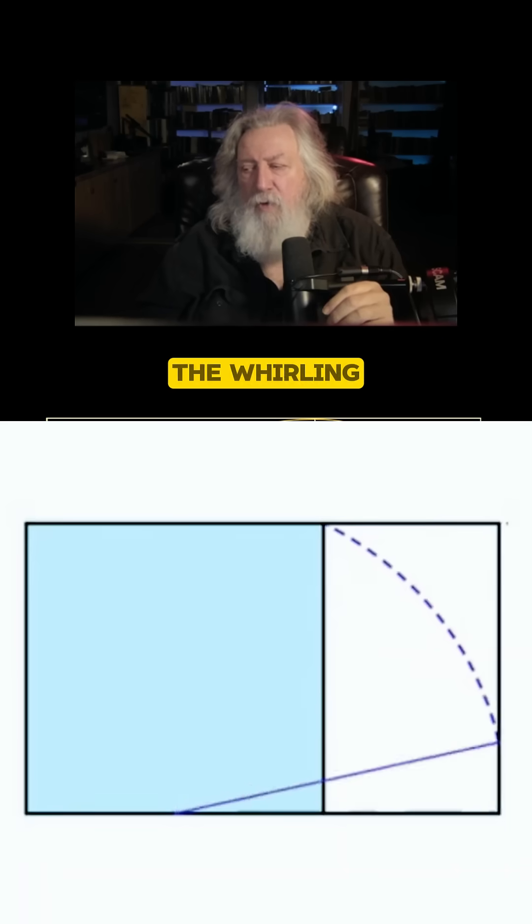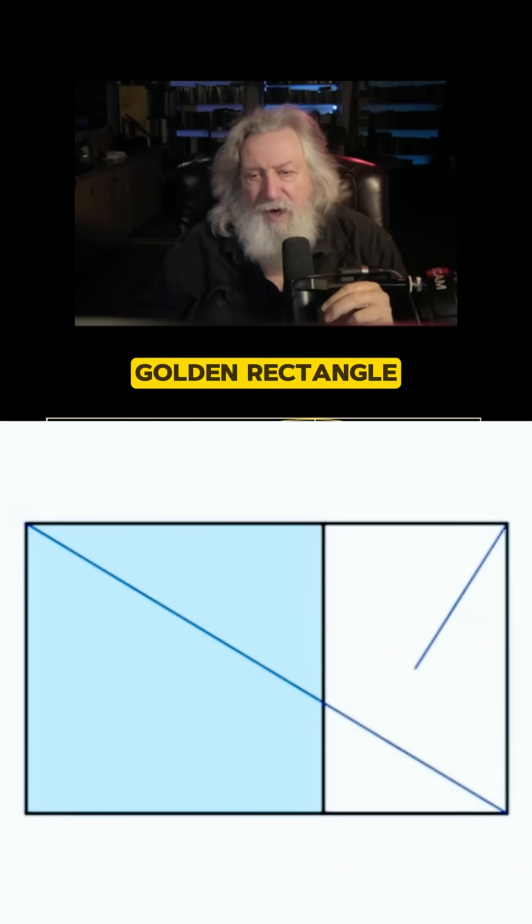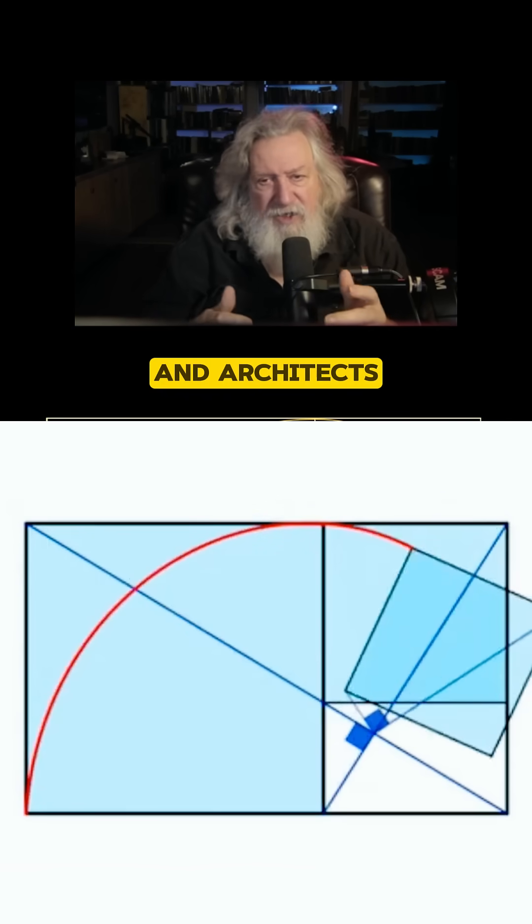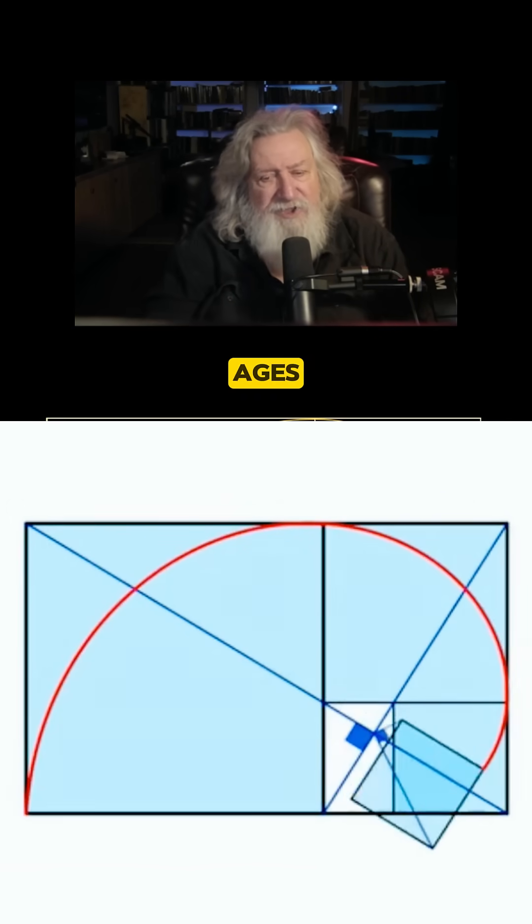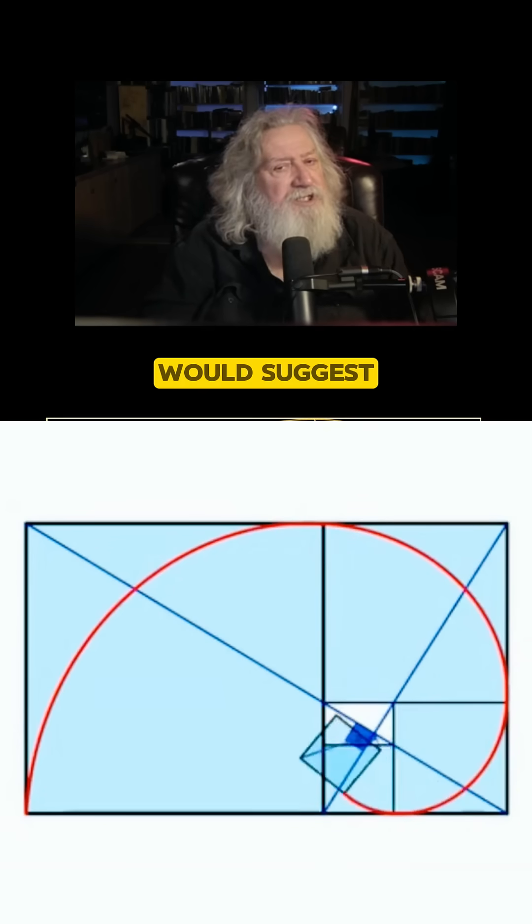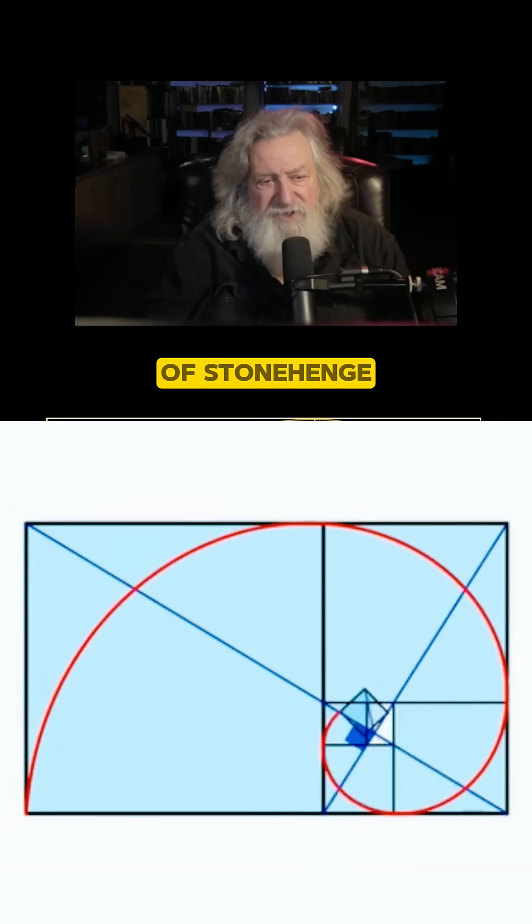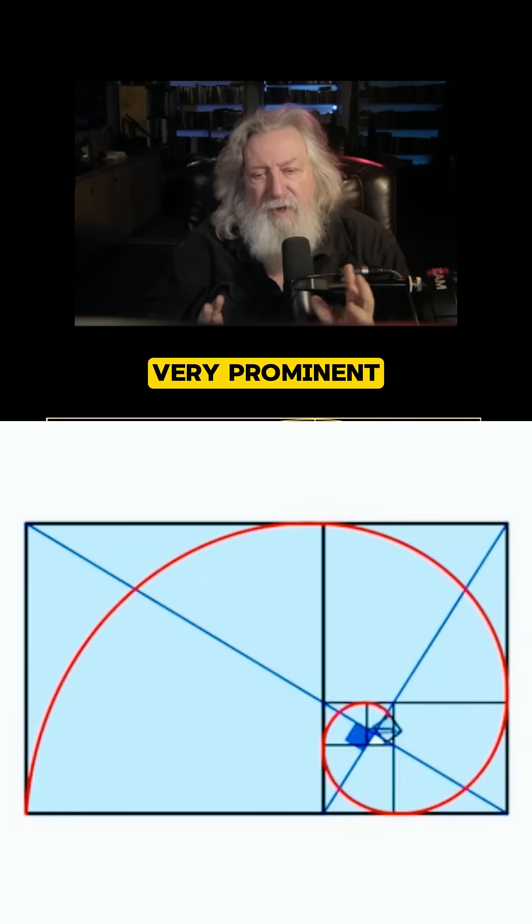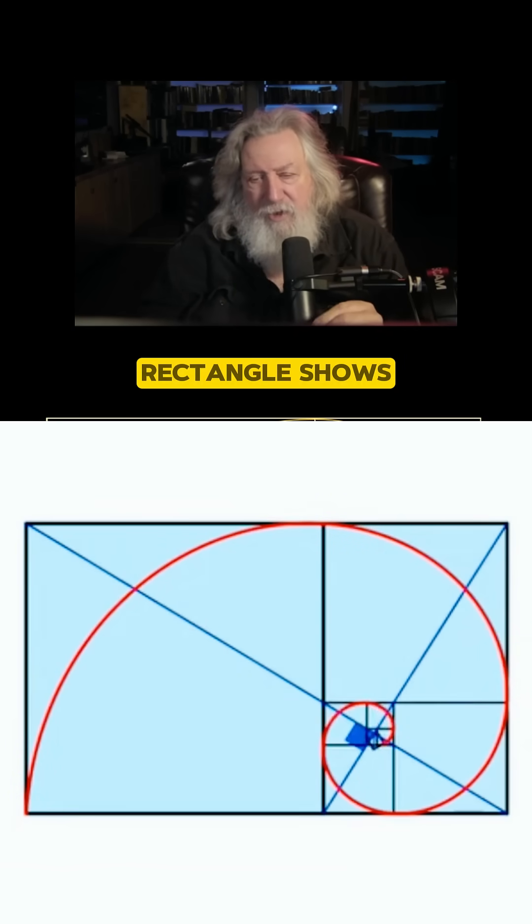So this is the rectangle of the whirling squares, also known as the golden rectangle. It was very important to artists and architects and builders throughout the ages, including, I would suggest, the builders of Stonehenge, because one very prominent place, this particular rectangle shows up.